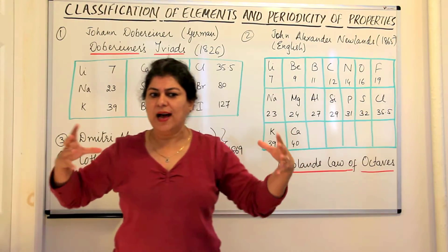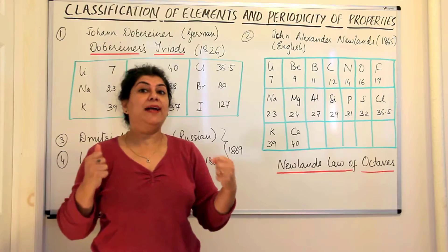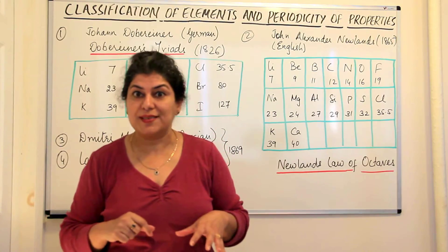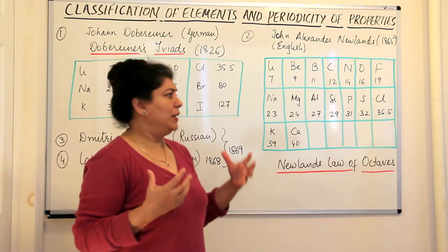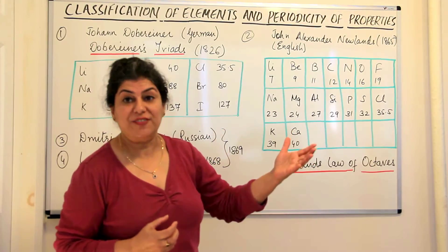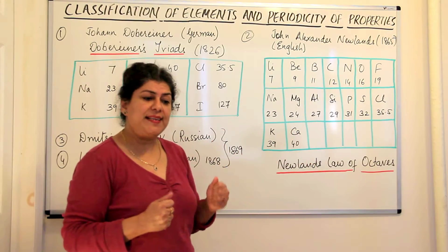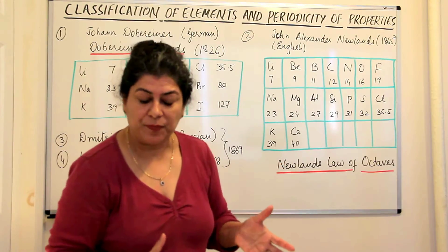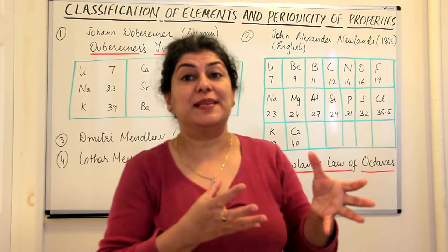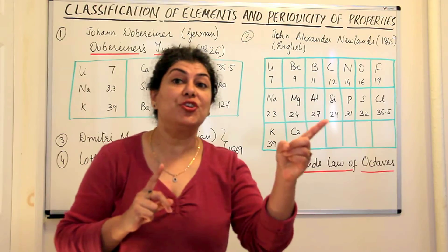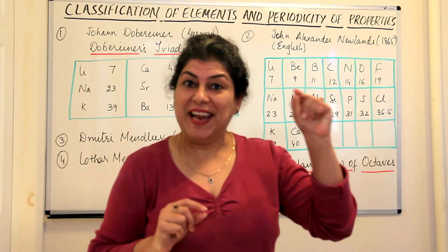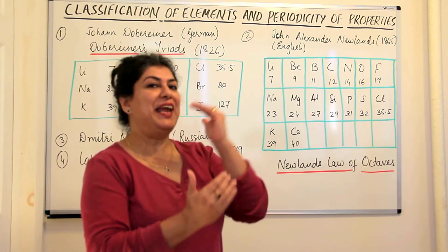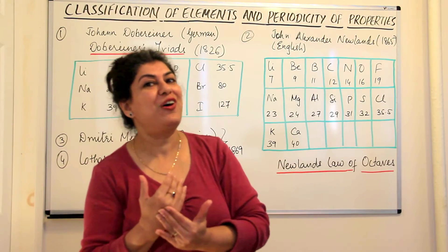Now we had a larger number of elements, and therefore classification had to be more extensive. Newlands' law is known as the Newlands law of octaves, just like the octaves of music. He said that if we arrange the then-known elements according to their increasing atomic masses, we find that the eighth element has properties which are a repetition of the first element, just like the eighth note of music is the repetition of the first note.